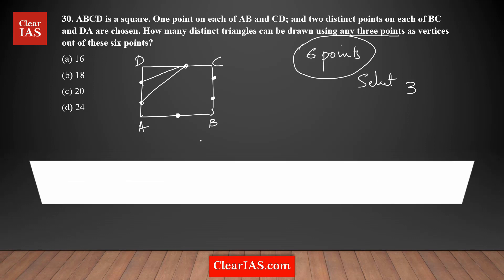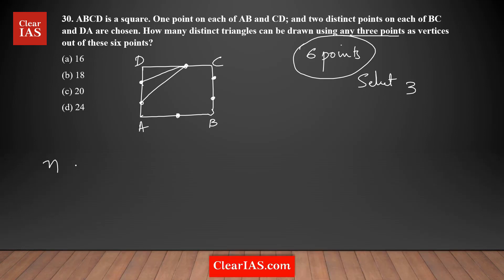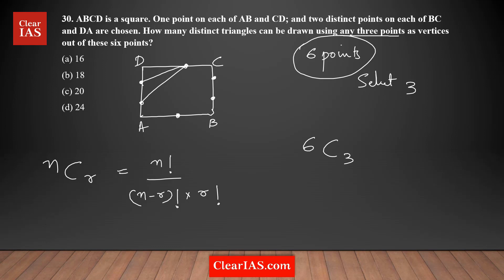This question is actually based on the permutation and combination concept. If you remember the formula: out of n items, how many ways can you select r items? NCR is equal to n factorial upon (n minus r) factorial times r factorial. This is the formula to calculate the combination. So here in this question, out of six items I need to select three, so n is equal to six and r is equal to three.